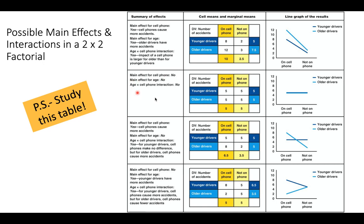Example six is nada — nothing, zip. Every condition scores a five, the lines are right on top of each other and straight across the graph. There's nothing going on: no interaction and no main effects.